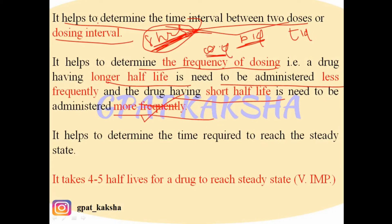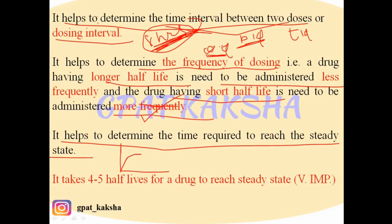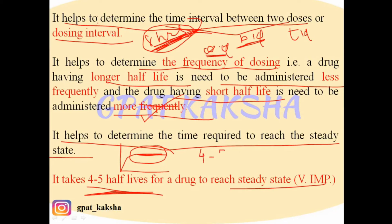Half-life also helps determine the time required to reach steady state concentration — the concentration at which plasma drug concentration becomes constant. It takes 4 to 5 half-lives for a drug to reach steady state. This is very important and has been asked in various competitive examinations many times.